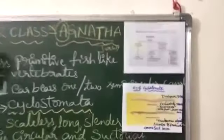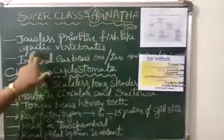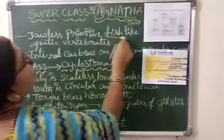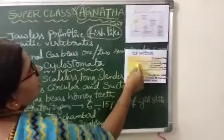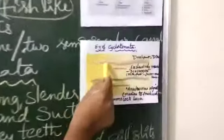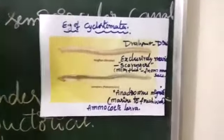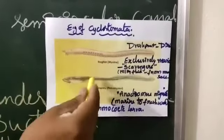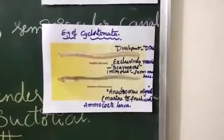Agnatha are primitive fish-like aquatic vertebrates. Their body forms are fish-like in structure. These are the examples of the Agnatha. The body forms are fish-like and they are aquatic vertebrates — they live only in water.